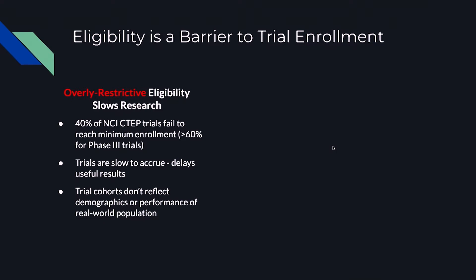We have very restrictive eligibility. For example, 40% of trials fail to reach the minimum enrollment — those trials didn't enroll enough patients. Also, slow trials delay useful results and delay drug approval. Additionally, if we have strict eligibility or strict selection rules, the cohorts selected may not reflect the demographics or the performance of all patients in the real-world population.